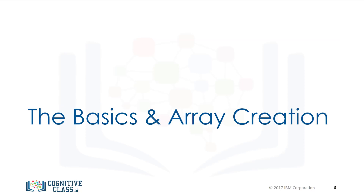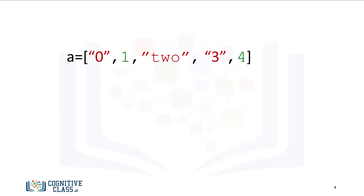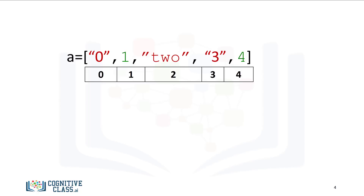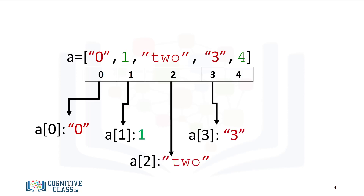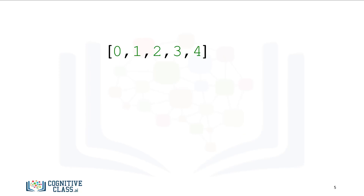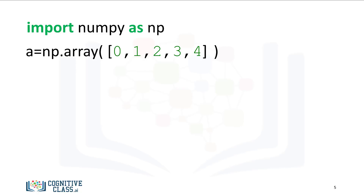Let's go over how to create a NumPy array. A Python list is a container that allows you to store and access data. Each element is associated with an index. We can access each element using a square bracket. A NumPy array, or nd array, is similar to a list. It's usually fixed in size, and each element is of the same type, in this case integers. We can cast a list to a NumPy array by first importing NumPy, then cast the list as follows.